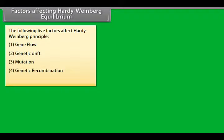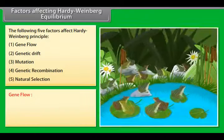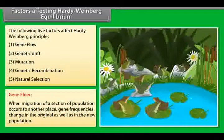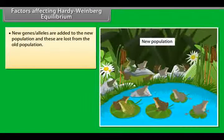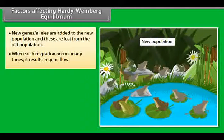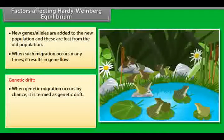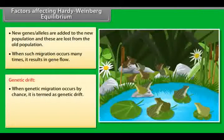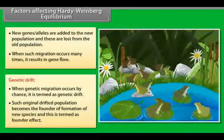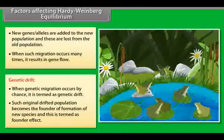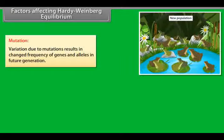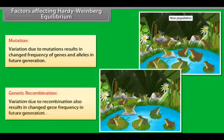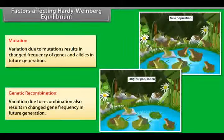Five factors affect Hardy-Weinberg equilibrium: No. 1 Gene flow, No. 2 Genetic drift, No. 3 Mutation, No. 4 Genetic recombination, and No. 5 Natural selection. Gene flow occurs when migration of a section of population to another place changes gene frequencies in both the original and new population — new genes and alleles are added to the new population and lost from the old. When migration occurs many times it results in gene flow. Genetic drift occurs by chance and can lead to the founder effect, forming new species. Mutation results in changed frequencies of genes and alleles in future generations. Genetic recombination also results in changed gene frequencies in future generations.